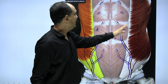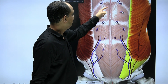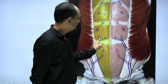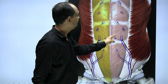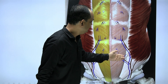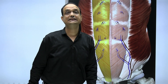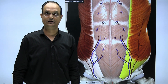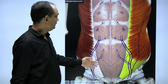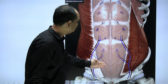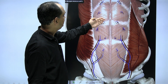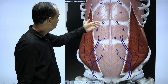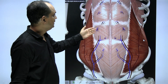In the midline you will have the linea alba. On both sides of the linea alba, the first thick layer you see is known as the anterior wall of the rectus sheath. When you cut this anterior wall of the rectus sheath, you will find the rectus abdominis muscle.